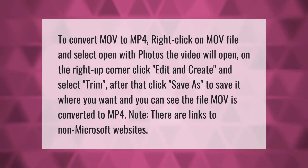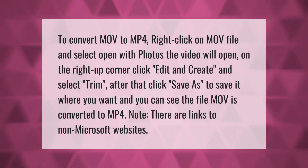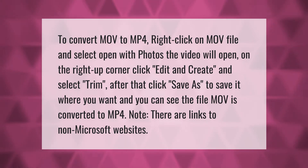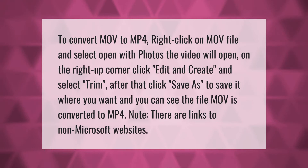To convert MOV to MP4, right-click on the MOV file and select 'Open with Photos.' The video will open. In the upper right corner, click 'Edit and Create' and select 'Trim.' After that, click 'Save As' to save it where you want, and you can see the file MOV is converted to MP4.